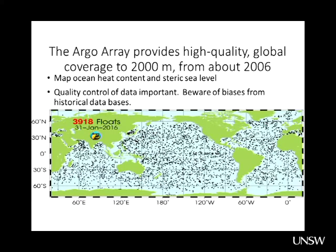There's hope that might change. The Argo array — profiling floats measuring upper ocean temperature from the surface down to 2,000 metres — has around 3,900 floats as of January 2016, roughly evenly distributed around most of the oceans, with some gaps under ice areas and in some marginal seas. This is a much higher quality dataset with more uniform global coverage spatially and seasonally, and the instruments are much higher quality than XBTs.